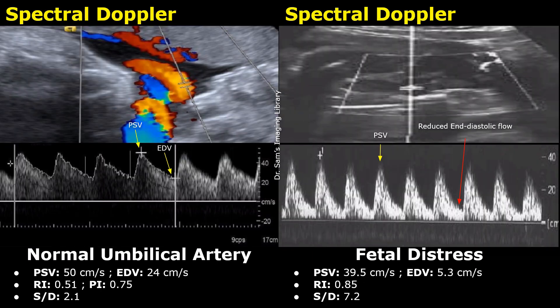Let's look at another case of normal umbilical artery blood flow. The PSV is 50 centimeters per second, the EDV is 24 centimeters per second, RI is 0.51, and PI is 0.75. The SD ratio is approximately 2.1. All of these values are normal.